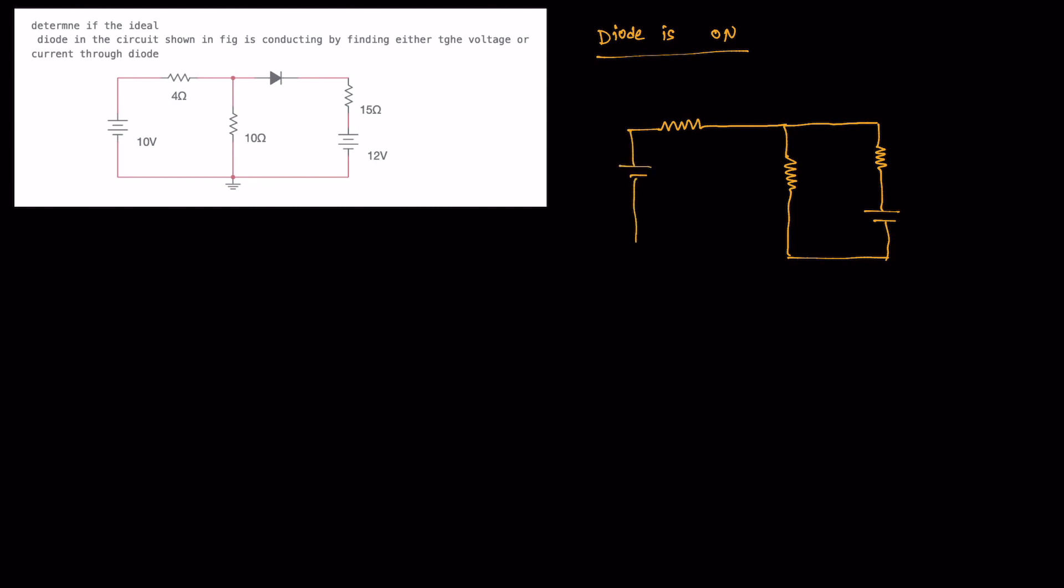Here is the equivalent circuit: 10 volts and 4 ohm resistor and 10 ohm resistor and 15 ohm resistor and 12 volt voltage source is connected. Now let's solve this by applying KCL equations. Let's write the basic KCL equation at node V.